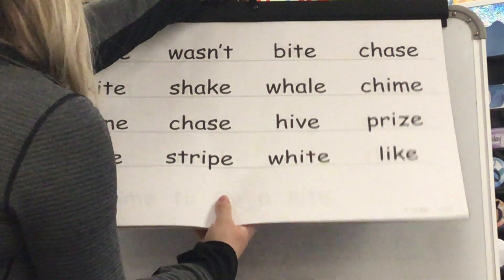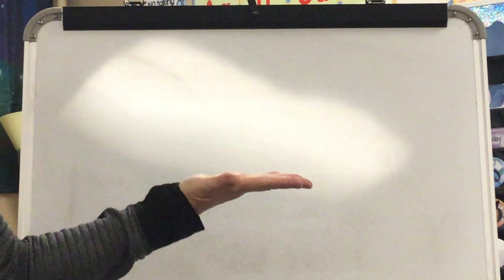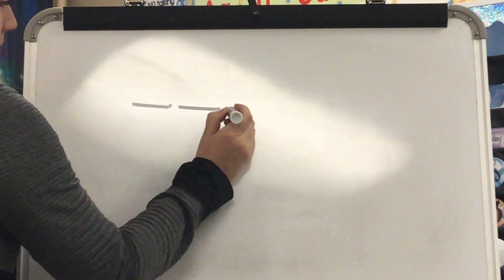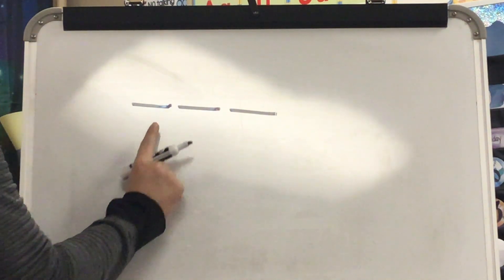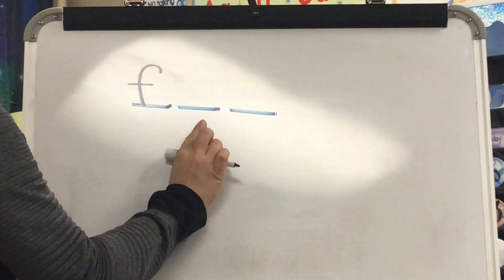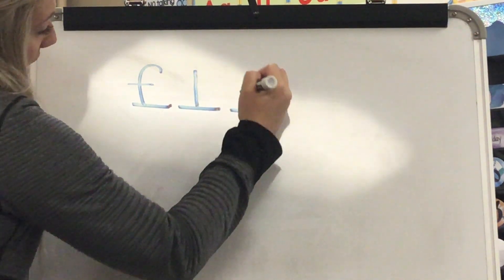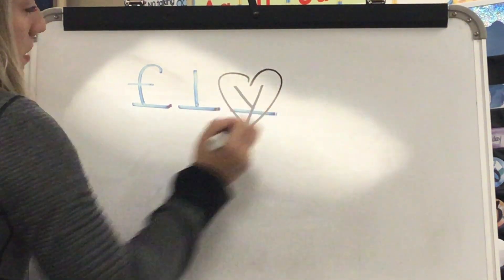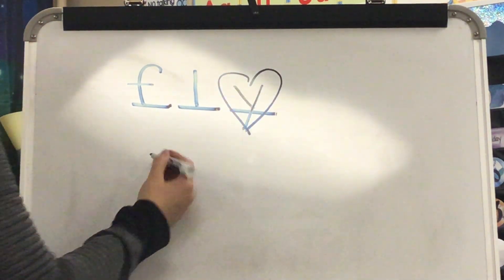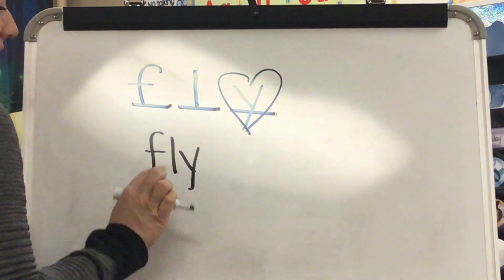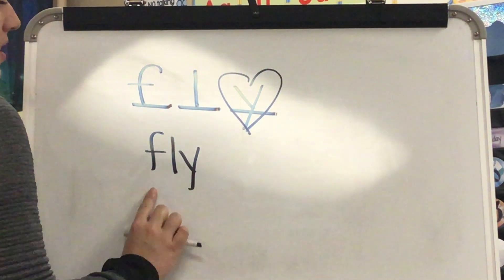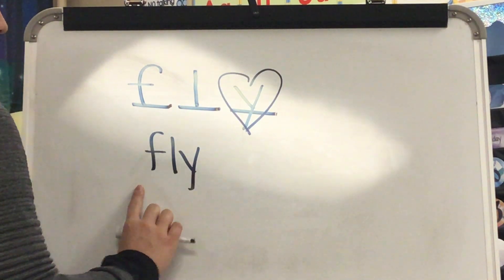We have two new heart words to talk about today. Our first new heart word is the word fly. What word? Fly. Stretch fly: F. L. I. What is the first sound you hear in fly? F. Yes. Next sound is L. Final sound: I. Yes. And fly is spelled Y — that's the tricky part of fly we have to know by heart. This word is fly. What word? Fly. Spell fly: F. L. Y. Word? Fly. Yes, fly.